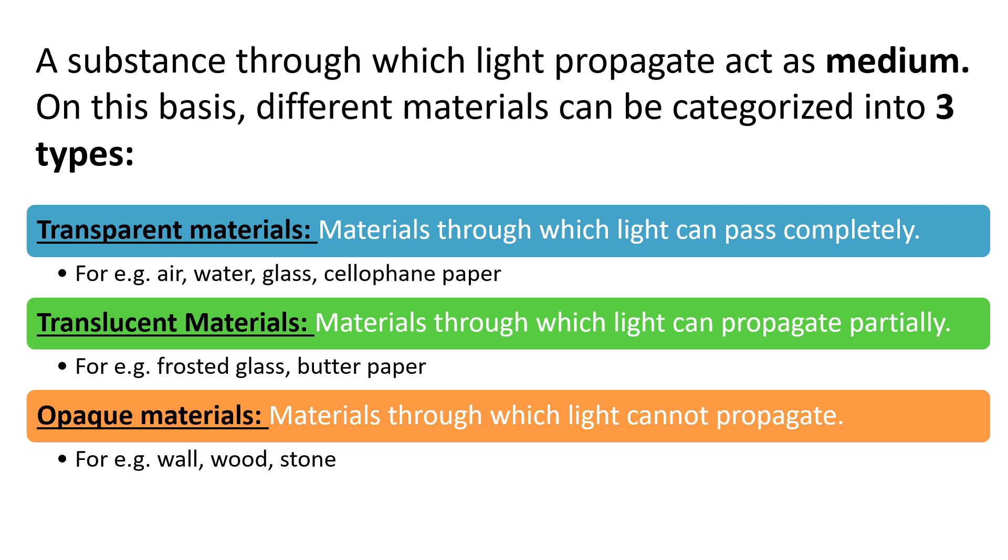First is the transparent material through which light can pass completely. For example, air, water, glass. Second is the translucent material through which light can propagate partially. For example, frosted glass and the butter paper.